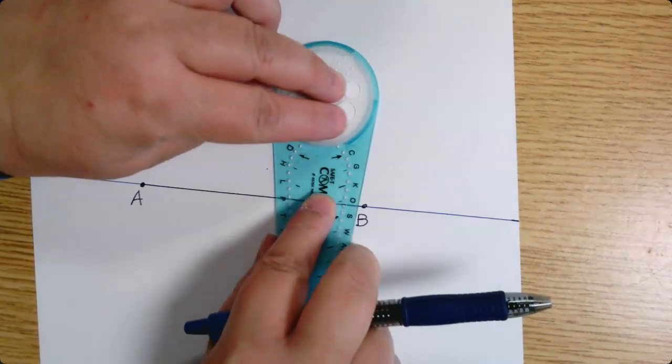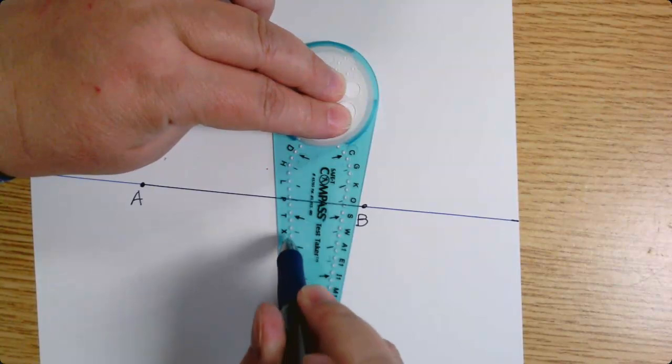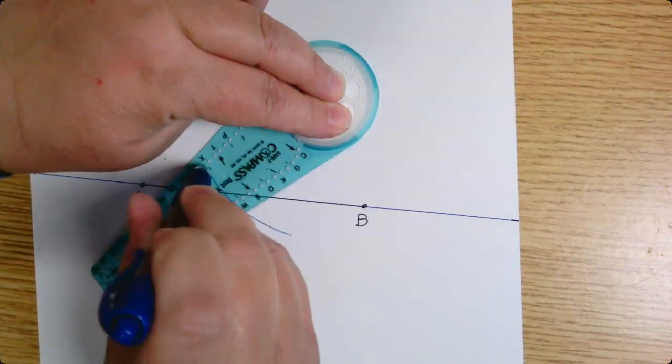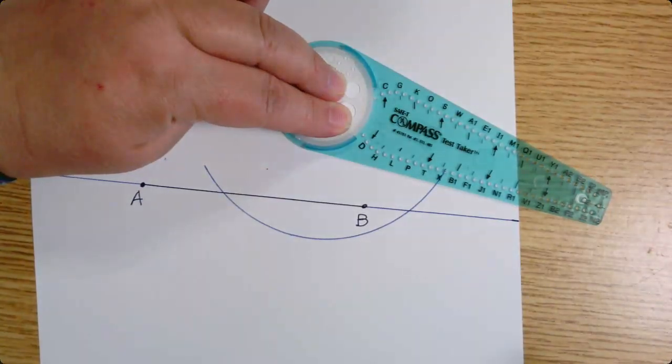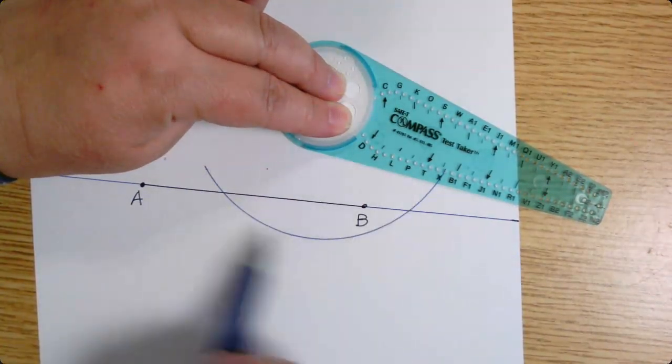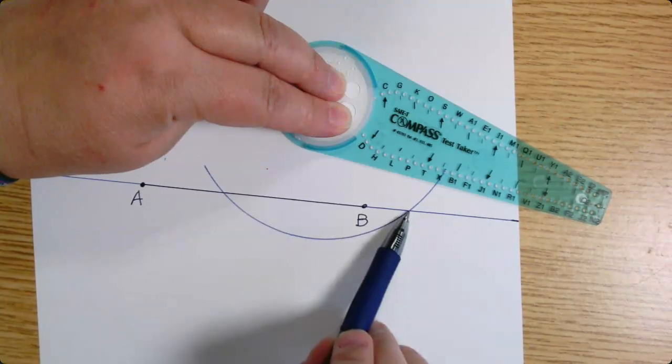All right, I don't have a particular measurement in mind. I just need to pick a hole that's going to give me an arc that goes across my line twice. So notice if I hadn't extended this, I wouldn't see it crossing, and I need to see where it crosses.